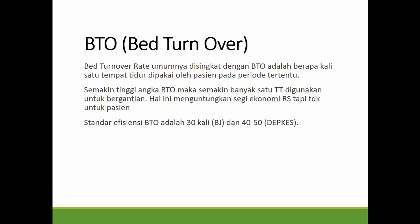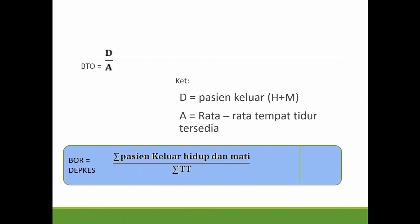BTO atau Bed Turnover: berapa kali satu tempat tidur dipakai oleh pasien dalam periode tertentu. Semakin tinggi angka BTO, semakin banyak satu tempat tidur digunakan bergantian. Hal ini menguntungkan dari segi ekonomis rumah sakit, tapi tidak untuk pasien. Nilai efisiensi BTO adalah 30 kali menurut BG, dan 40-50 kali menurut Depkes. Semakin tinggi BTO bisa mempengaruhi jumlah kasus infeksi nosokomial. Rumus BTO: pasien keluar hidup dan mati dibagi A (rata-rata tempat tidur tersedia).